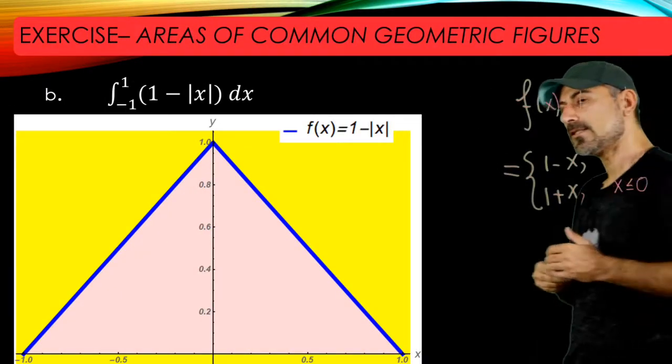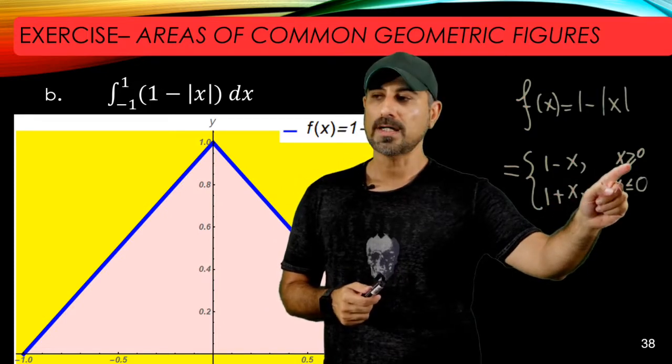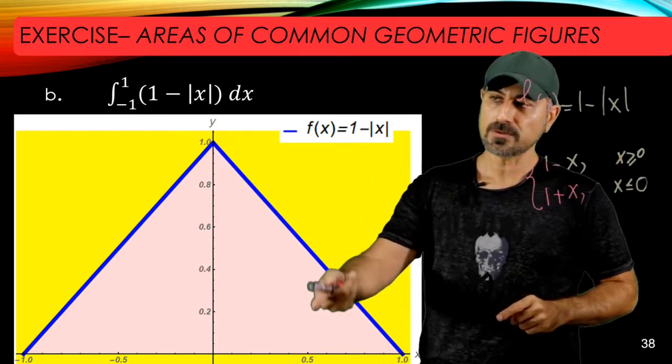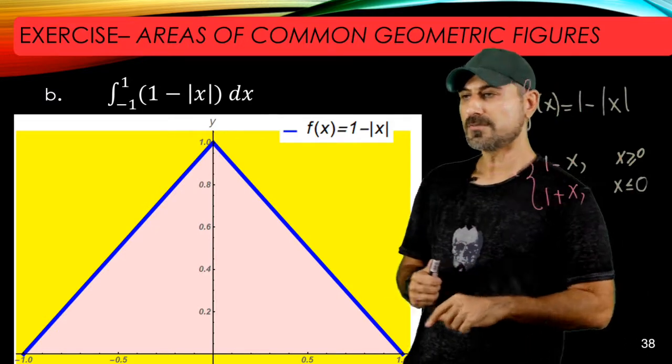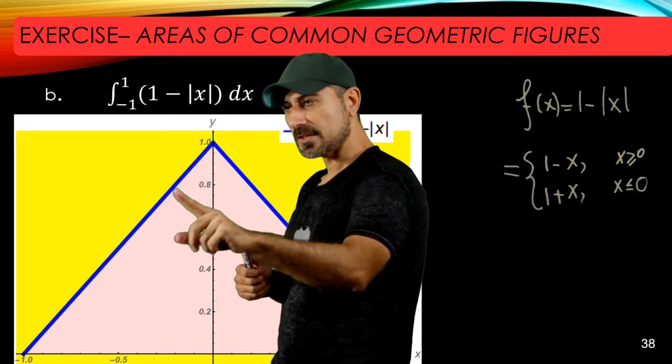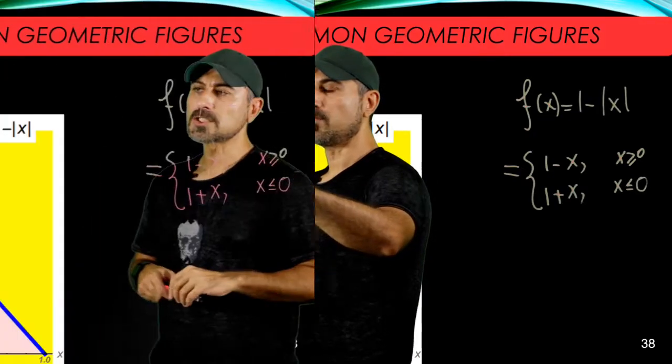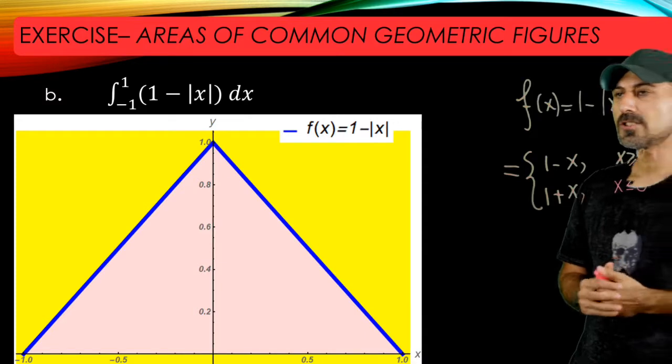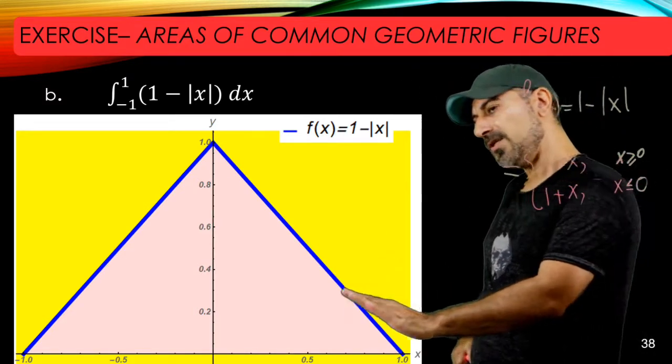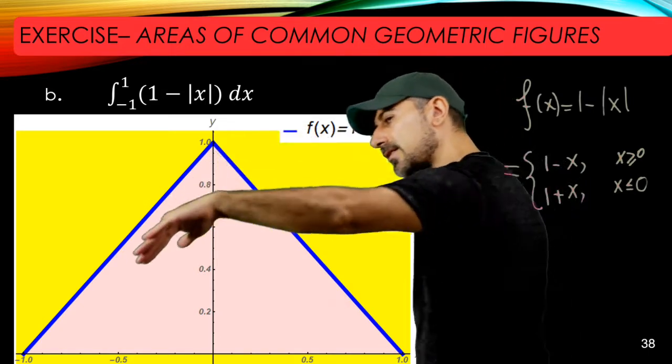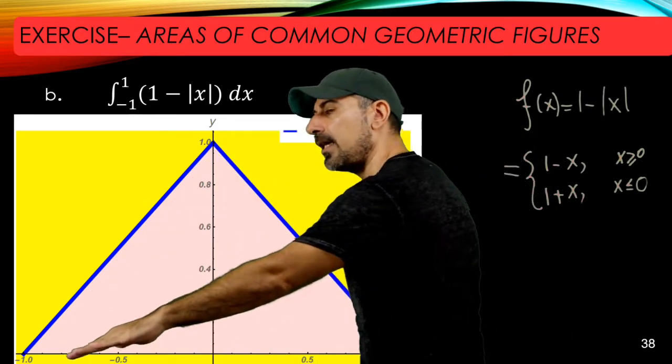So what you can do in your calculator is that you can graph one minus x for positive x's, which is going to be this graph here with negative slope, and then you can graph one plus x for negative values of x, and that comes with positive slope—it's this one. So two of them intersect at this point. So the correct representation of the region is the area between this blue curve, the x-axis, and the vertical lines x equals negative one and x equals one.